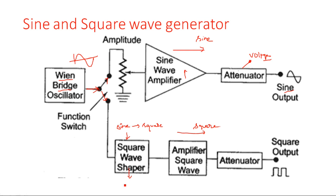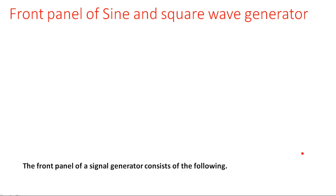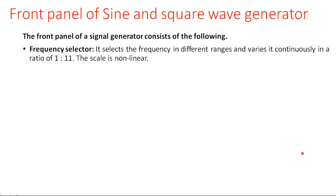A Schmitt trigger can convert any type of input waveform into a square waveform, or a comparator can also be used. The output of the square wave shaper is given to an amplifier, which amplifies the square waveform, and then to an attenuator. The output is the square wave output.